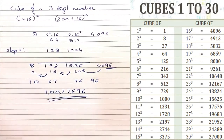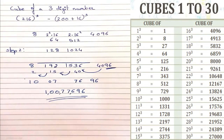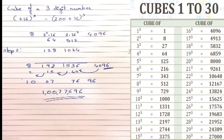So if we are taking the cube of a 3-digit number, we retain 2 digits and carry over the rest. And if we are taking the cube of a 2-digit number, we retain only 1 digit and carry the rest.